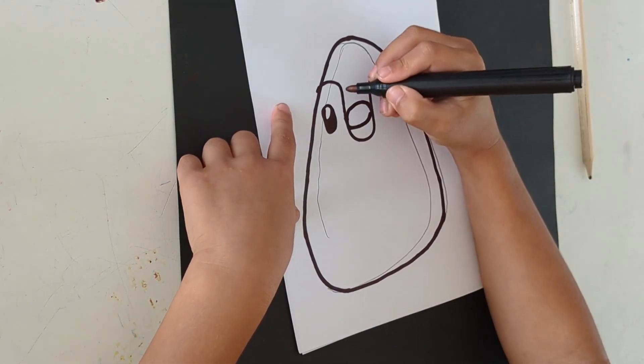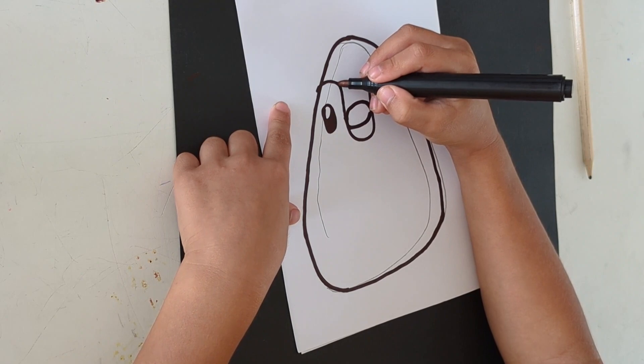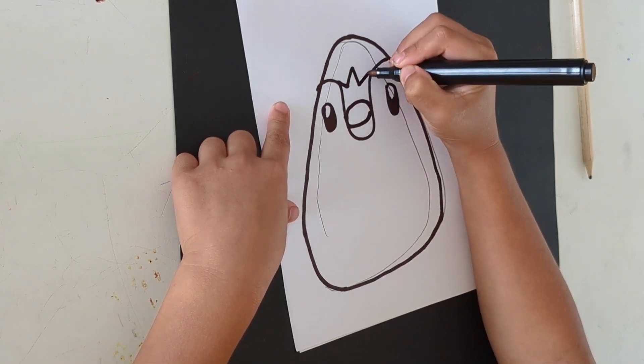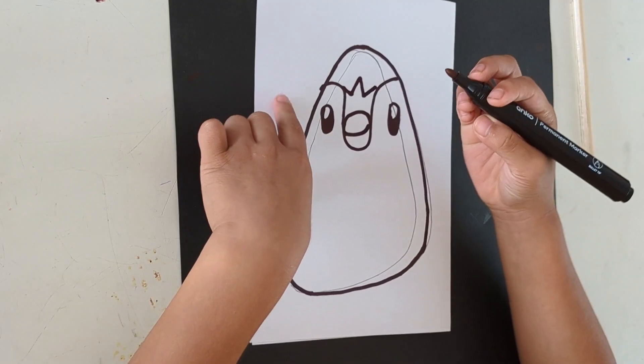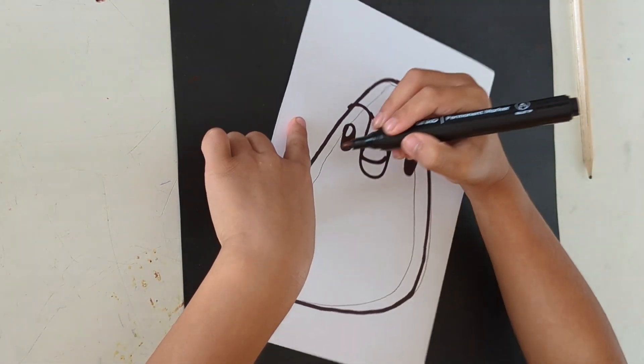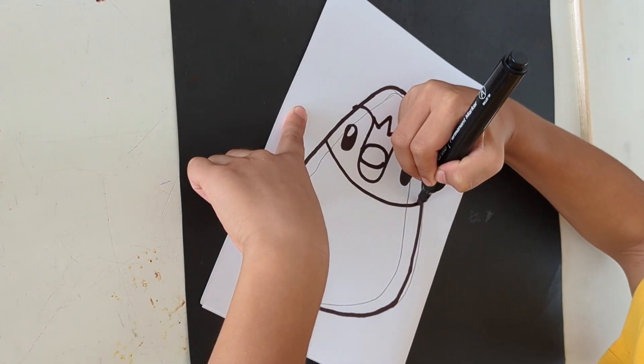Okay, now let's draw like a little crown shape. Zigzag. Okay. Now we're going to draw a curve so you know it's his head.